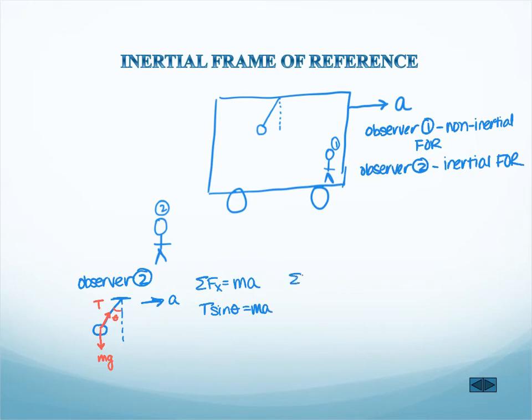And in the y direction, there's equilibrium. The mass is not moving up or down. I have T cosine of theta minus mg equals zero.